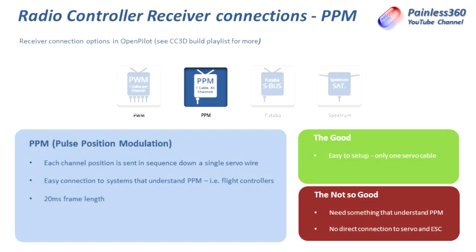The great thing with PPM is it's a piece of cake to set up — connect one single wire into the flight controller, tell it that it's PPM, and you're done. The downside is it needs to plug into something that understands PPM, so it must be a flight controller; you can't plug it directly into a speed controller or servo. One potential issue is channel mapping, because not all PPM receivers send channels in the same order, so you may need to select the correct model or reorder the channels on your flight controller.